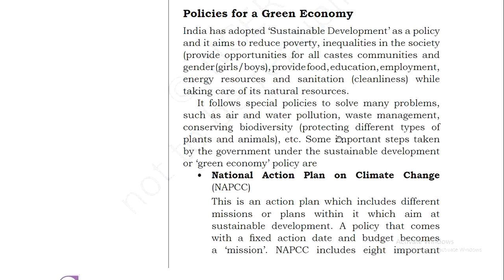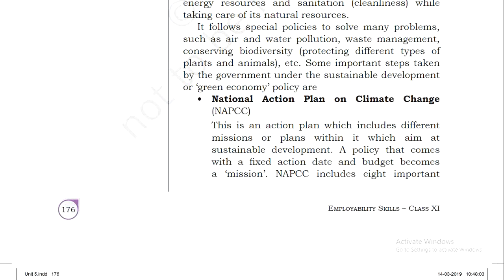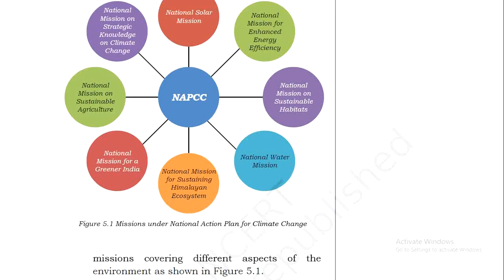Some important steps taken by the government under the Sustainable Development and Green Economy Policy include the National Action Plan for Climate Change, NAPCC. This is an action plan which includes different missions and plans aimed at sustainable development. A policy that comes with a fixed action date and budget becomes a mission. The NAPCC includes eight important missions covering different aspects of the environment.